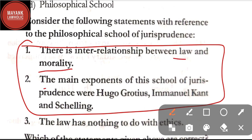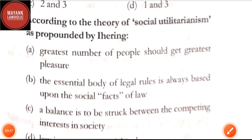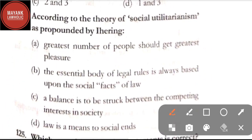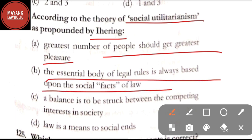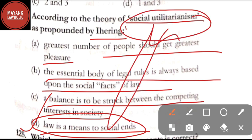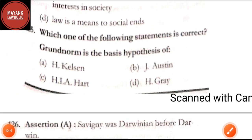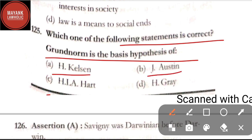Question number 124: according to the theory of social utilitarianism as propounded by Ihering — option A: greatest number of people should get greatest pleasure; option B: the essential body of legal rules is always based upon the social facts of law; option C: a balance is to be struck between the competing interests in society; option D: law is a means to social ends. The correct answer is option D, law is a means to social ends. Question number 125: 'Grundnorm is the basic hypothesis' — this is of option A, Kelsen. The correct answer is option A, Kelsen.